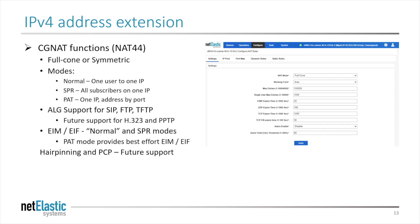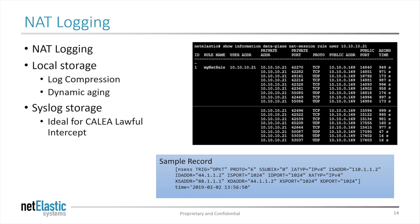The CGNAT router runs in symmetric or full cone mode and can be configured in normal, SPR, or PAT modes. It provides application layer gateway support for all the key modern protocols, and endpoint-independent mapping and filtering. Hairpinning, PCP, and PPTP ALG support are coming. The Netelastic V-Router provides NAT logging for compliance with law enforcement guidelines using either local storage for a self-contained solution, or syslog support for large subscriber bases or very long-term storage. We support both verbose and type 5 NAT log records.